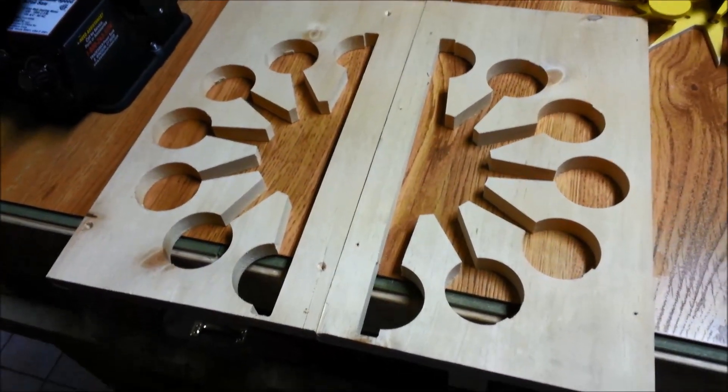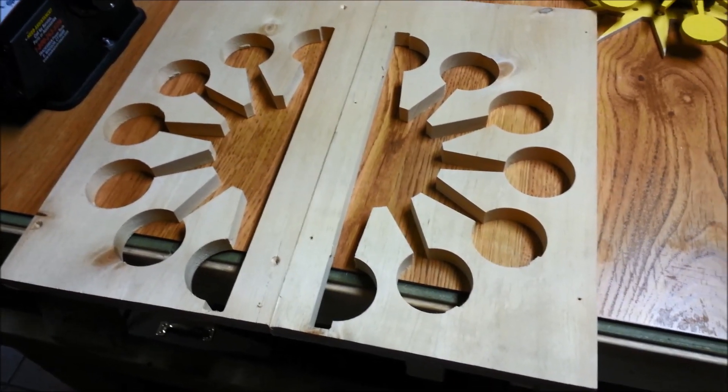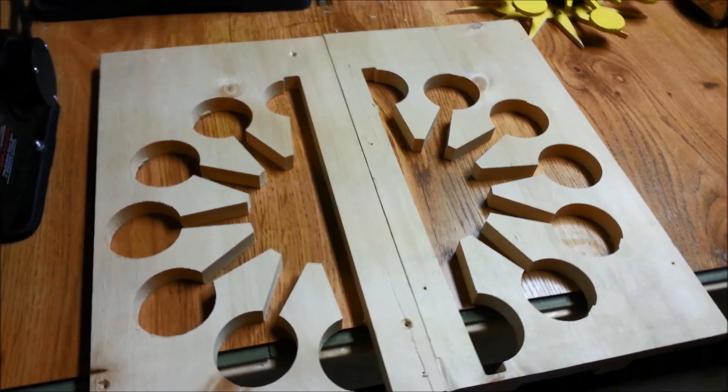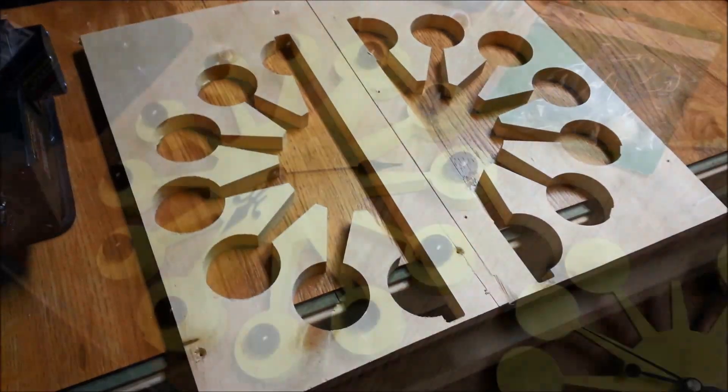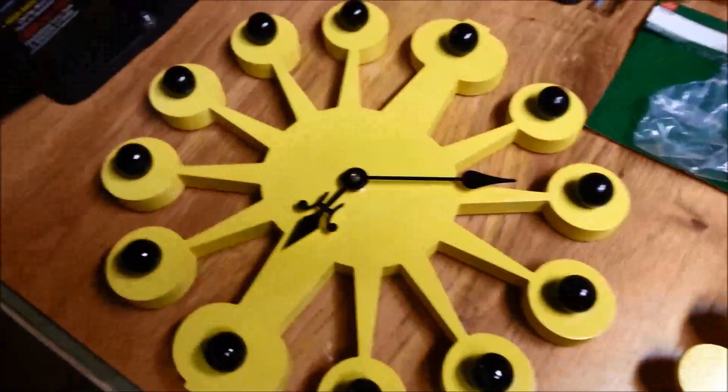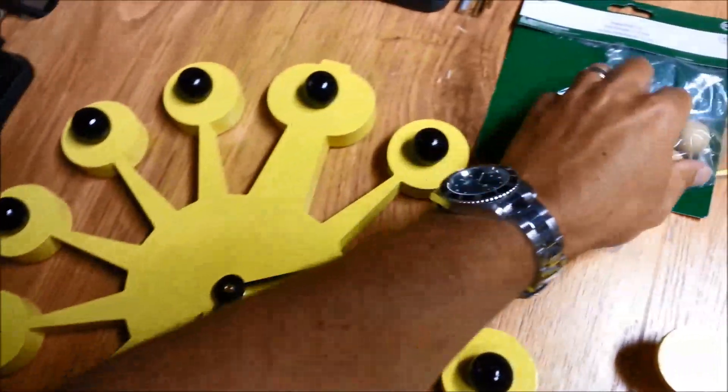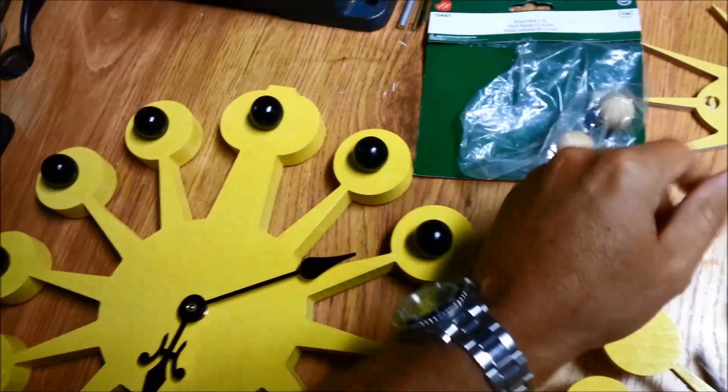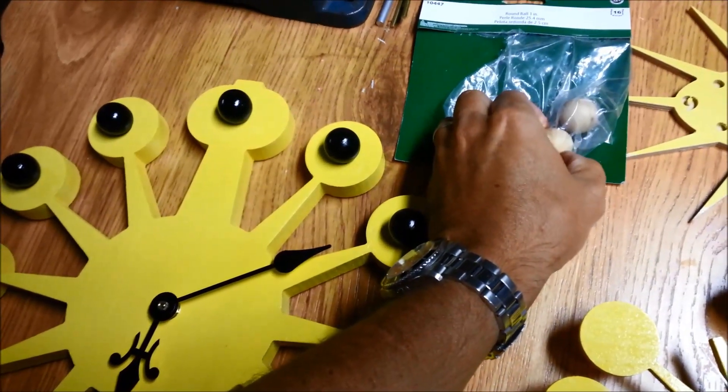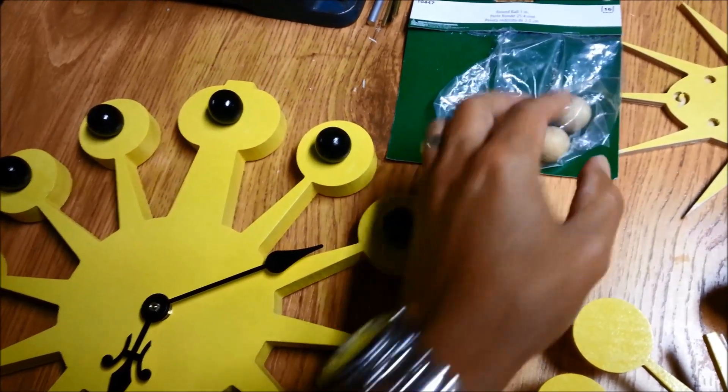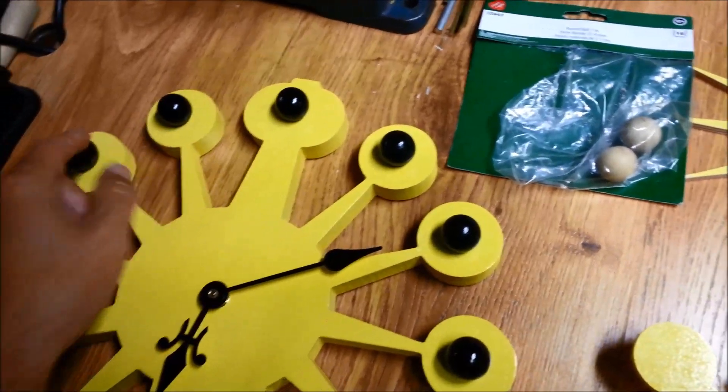This was designed in Inkscape, very easy to do, and then sent over to JS Cut for the toolpaths. For the black marbles, these are just made out of wood, picked up at Michaels, and then each side was sanded down with a power sander for a flat spot, and then just glued on.